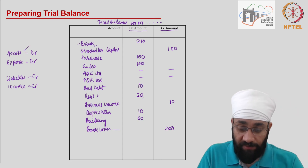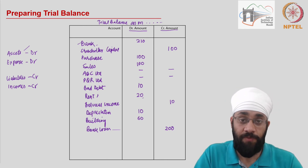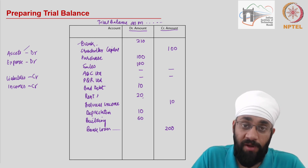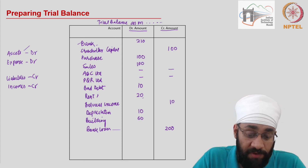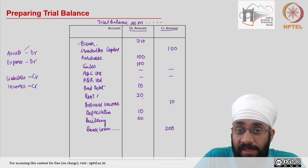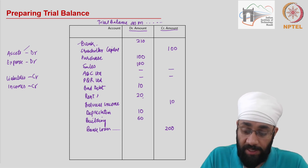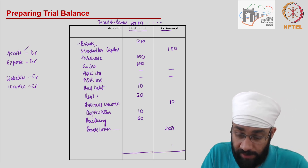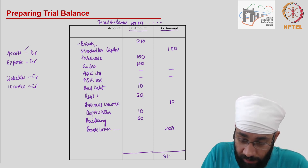Now we have brought all the account balances to the trial balance. This is possibly the easiest statement to prepare — most of the work had to be done in writing the journal entries and posting them into the ledger. After that you just have to bring all the closing balances from the ledger accounts and put them in this statement. The next step is to just do a total of the two sides.